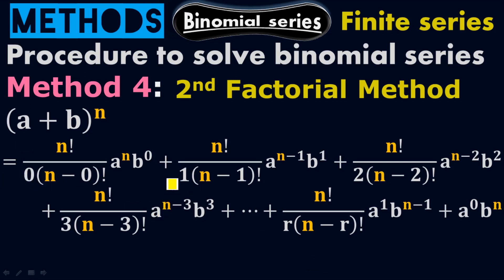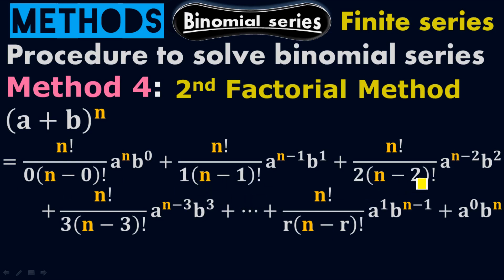The r values are 0, 1, 2 and so on. It starts from 0 because we have r times (n minus r). So r starts from 0, then 1, then 2, then 3, and so on. The n here is the value of n — whatever value you have for the power, you just plug in that value for this n.